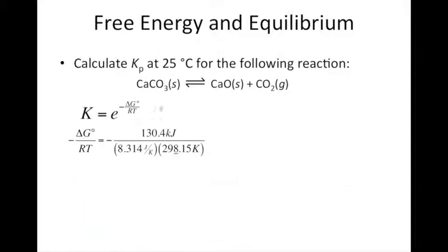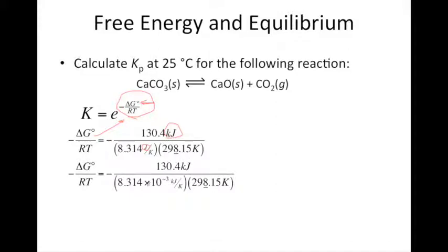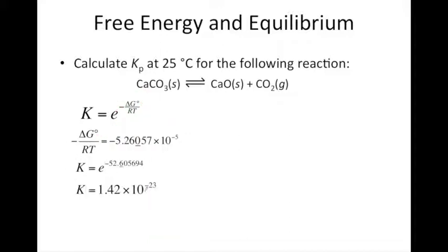That's not our final answer — that ΔG standard value goes into our equation for K. We plug in R (converted to kilojoules) and T in Kelvin. Solving negative ΔG standard divided by RT gives approximately negative 52.6, with no units. Raising e to that power, we get an equilibrium constant K of 1.42 times 10 to the negative 23.